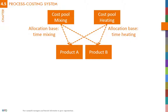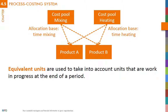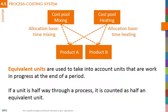Another characteristic of process costing is the use of equivalent units. Because there are often products in process that have started to be processed but are not yet finished at the end of a period, we need to calculate the number of equivalent units to allocate indirect costs to work in progress or finished products. For instance, if a product is in the middle of the production process, each unit is equivalent to half an equivalent unit because only half of the resources have been incorporated into the product.